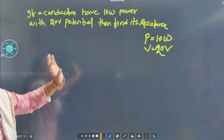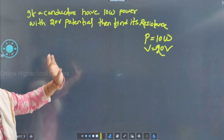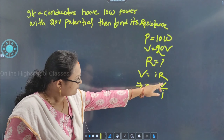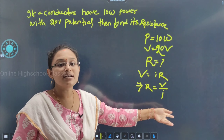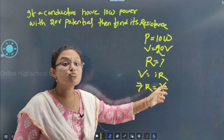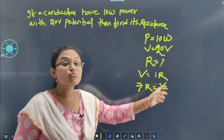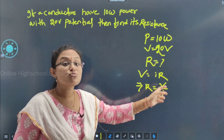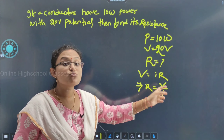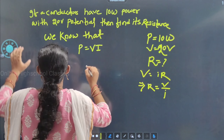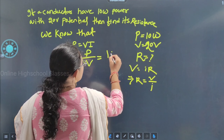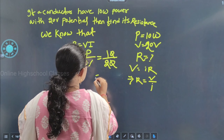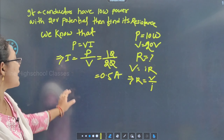The formula is V = IR, so R = V/I. We know V but need to find I first. We know that P = VI, so I = P/V = 10/20 = 0.5 ampere.